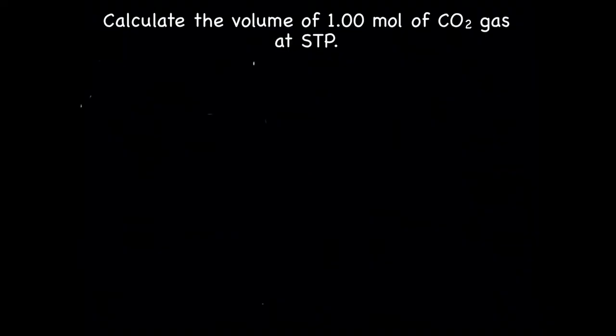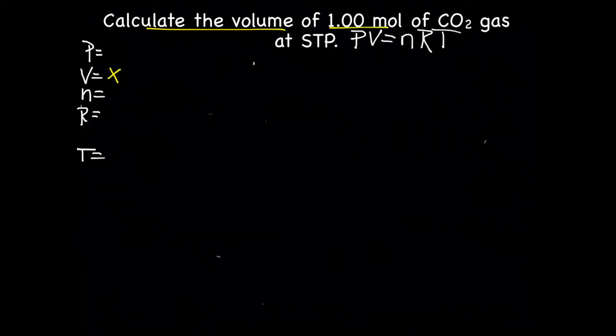Let's try this practice problem. Calculate the volume of 1 mole of gaseous CO2 at STP. We're going to be using the formula PV equals nRT. Start by making a list of our variables. So we have pressure, volume, n for number of moles, R is our constant, and T for temperature. As we read through the story, we have calculate the volume, so volume is our X, of 1.00 mole, that's our n, of CO2 gas at STP. STP stands for standard temperature, which is 273 K, and standard pressure, which is 1 atm.